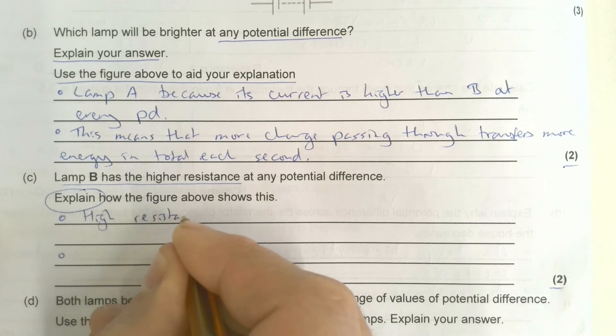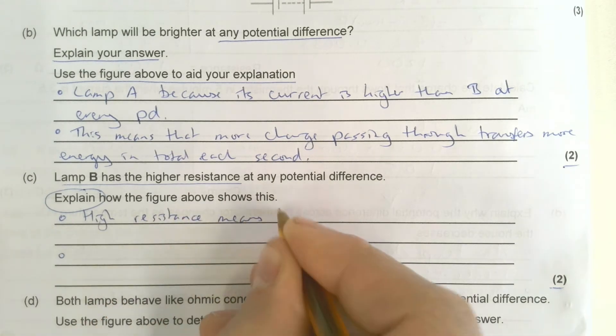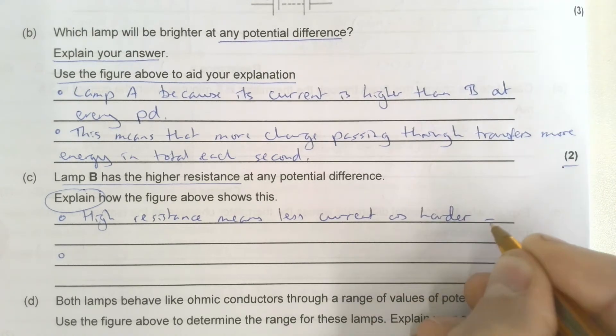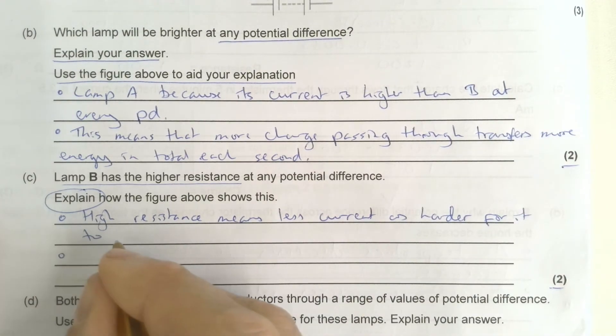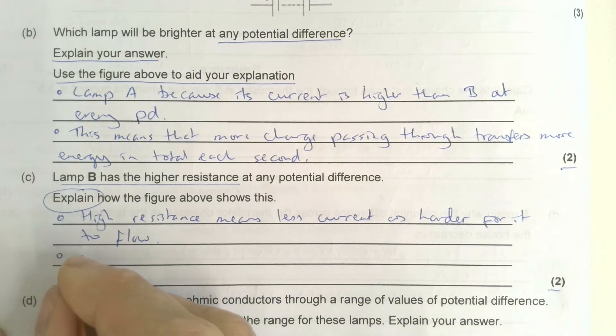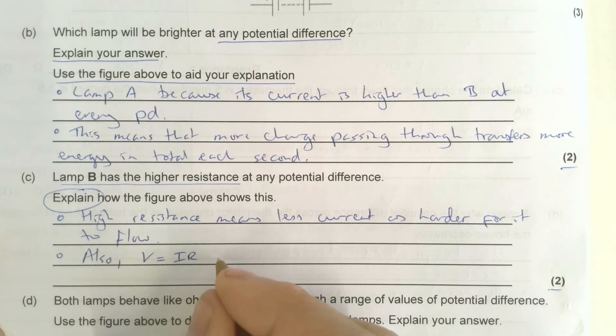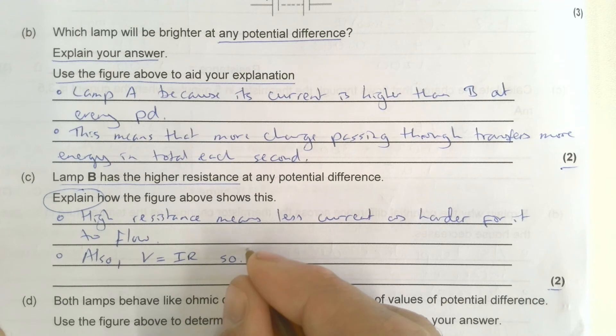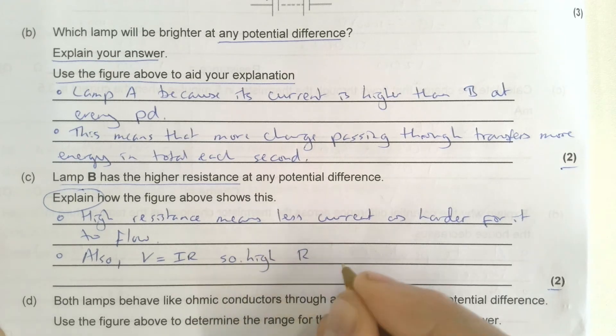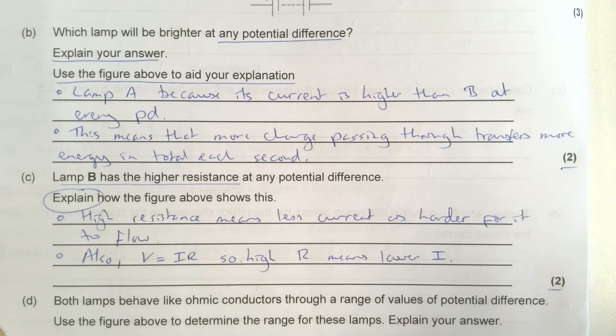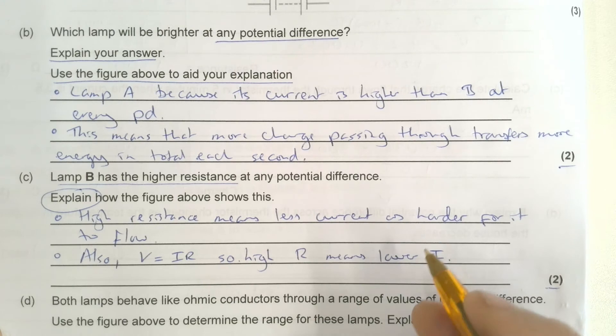High resistance means less current as it's harder for it to flow. We also know V equals IR, so high R means lower I.